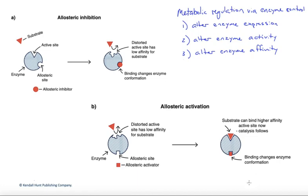Cellular metabolism can in many ways be thought of as a series of linked enzymatic pathways — a series of chemical reactions catalyzed by enzymes. In many cases, those metabolic pathways have to be regulated. These are pathways that include the production and use of cellular energy, for instance. To do so, we can regulate enzyme function in three separate ways.